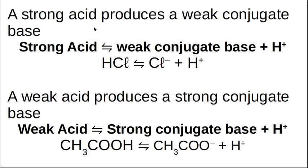A strong acid gives you a weak conjugate base: removing the proton leaves a conjugate base that doesn't want to accept it back. A weak acid gives you a strong conjugate base: the conjugate base strongly wants to accept protons and reverse the reaction. So the equilibrium for a strong acid lies to the right, while for a weak acid it lies to the left.